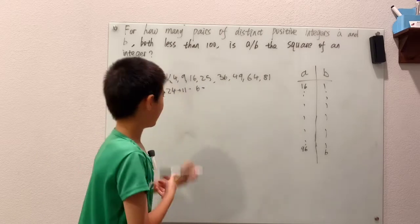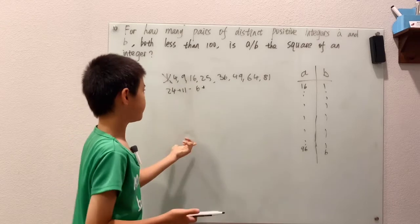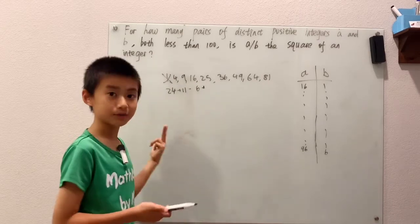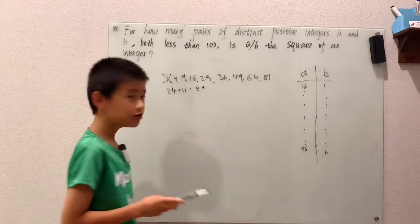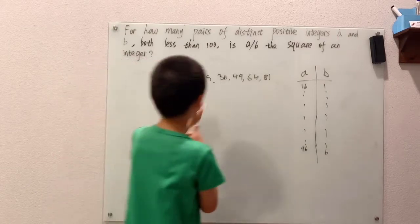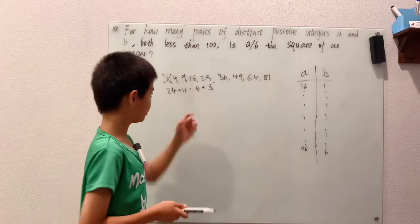Well here, thankfully 25 is a lot easier. I don't even need the chart for that. It's just 25 and 1, 50 and 2, 75 and 3, and then for 4 it will be 100, and you can't have equal to 100, which means for 25 it's also just 3 options.